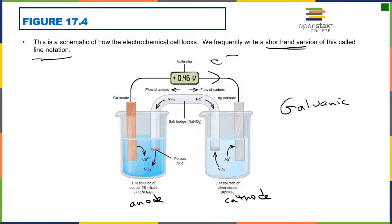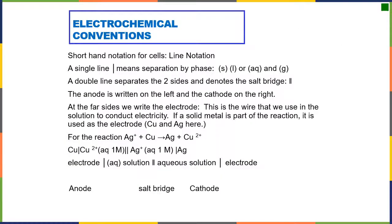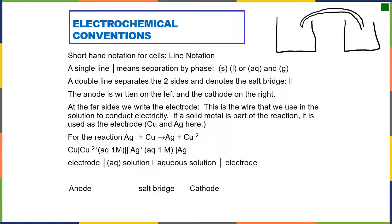We have a shorthand version of this called line notation, and this makes our lives much easier. So we can write a shorthand for electrochemical cells. The electrochemical cell we designate here is a couple of beakers connected by a salt bridge. This allows us to complete the circuit. The wires are the electrodes and the contents inside the beakers are either going to be aqueous or they're going to be a gas.